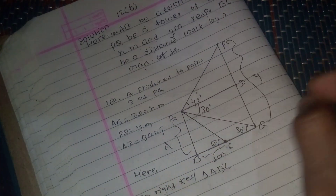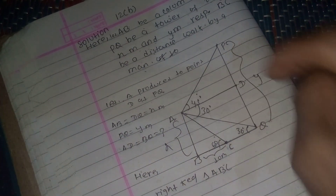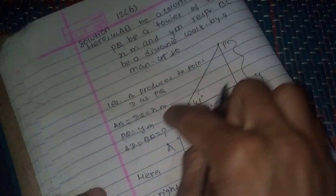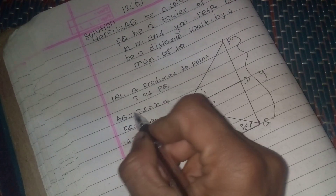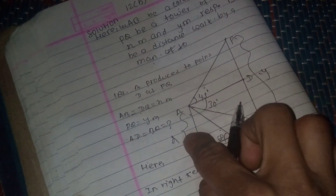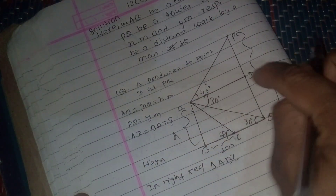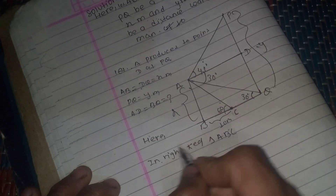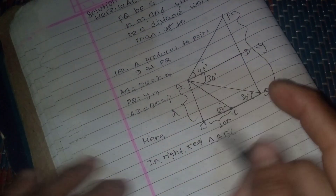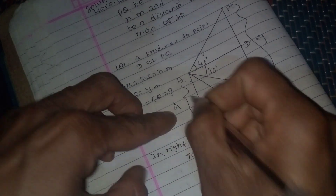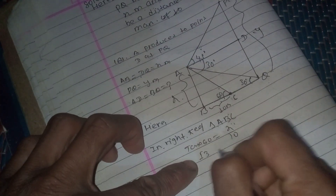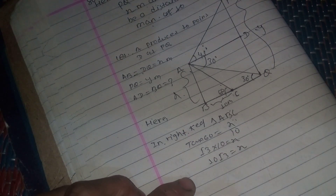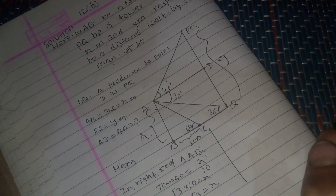We produce PQ to point D. Let AB equal DQ equal x meters, and PQ equal y. BQ equals AD as opposite sides of rectangle. In right angle triangle ABC, tan 60 degrees equals x divided by 10, so x equals 10 root 3.